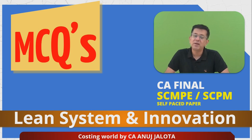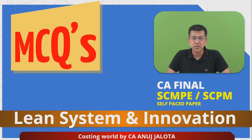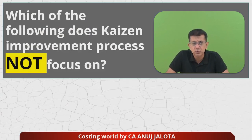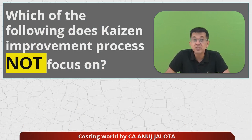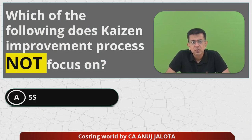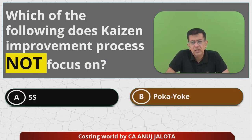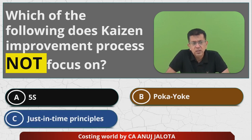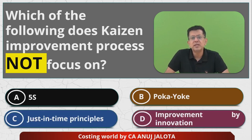Just before that, a reminder — in case you wish to be joining our complete course, read the description below and join our Telegram channel for frequent updates for this subject. The question for today is: which of the following does the Kaizen improvement process NOT focus on? The four options are: A) 5S, B) Poka Yoke, C) Just-in-Time principles, and D) improvement by innovation.